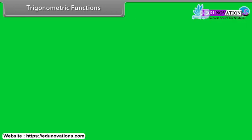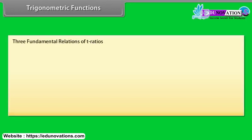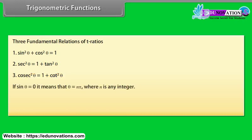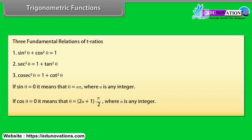Three fundamental relations of T-ratios: sin²θ + cos²θ = 1; sec²θ = 1 + tan²θ; cosec²θ = 1 + cot²θ. If sin θ = 0, then θ = nπ where n is any integer. If cos θ = 0, then θ = (2n + 1)π/2 where n is any integer.